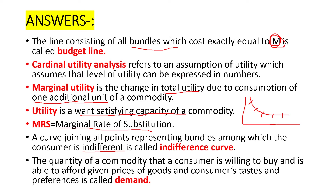What do we mean by demand? Demand is the quantity of a commodity that a consumer is willing to buy and is also able to afford it, given prices of goods and consumers' taste and preferences. That is called as demand. These are the answers for the second chapter.